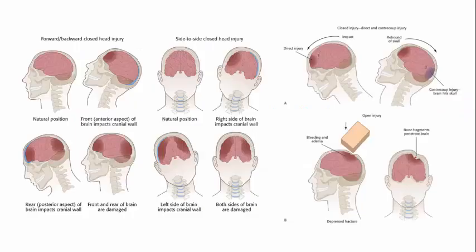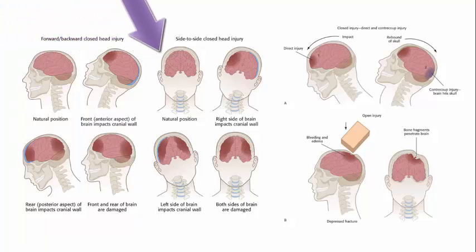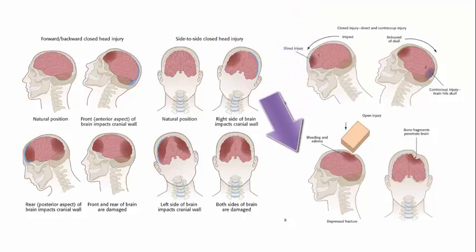In your textbook there are pictures showing different types of injury. A forward-backward closed head injury shows the brain moving forward and hitting the back of the skull. A side-to-side brain injury would be like being T-boned. You could also have a counter-coup type injury where both the front and back are bruised. A depressed fracture occurs where a blow to the head fractures the skull and also hurts the brain. This picture is located on pages 350 and 351.